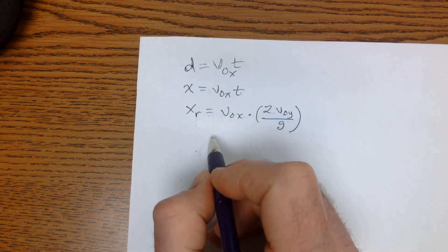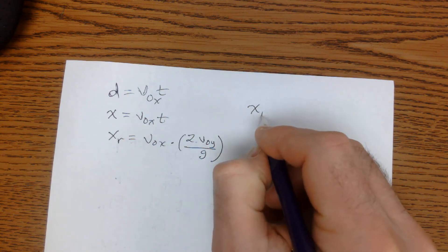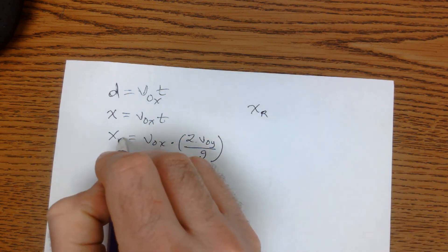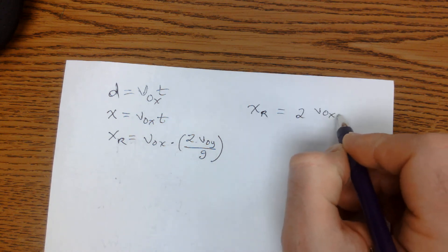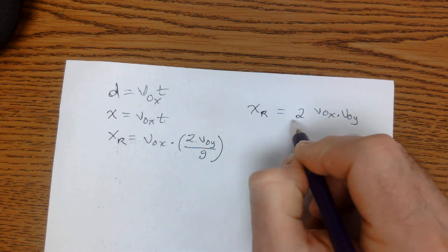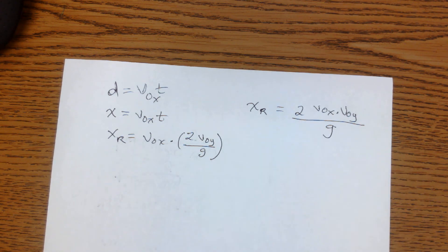Or you could rearrange that just a little bit more and get that x in the r direction of the range is equal to 2 times v0x times v0 in the y direction all over g. Same thing, just looks a little bit different, but the algebra works out the exact same on it.